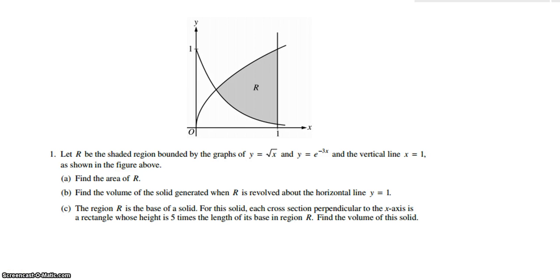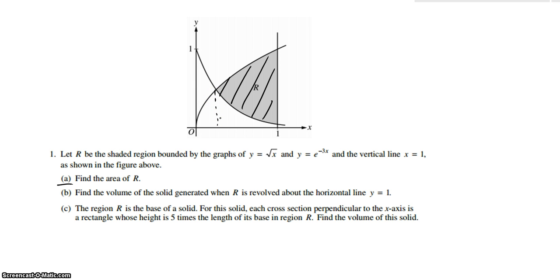This is AP Calculus BC, 2003, Question 1. For part A, we need to find the area of R. For this question, we need to find what X is at the two equation intercepts. Because this is a question in the calculator section, we use our calculator.